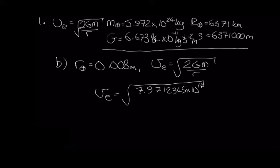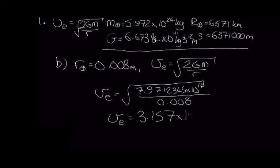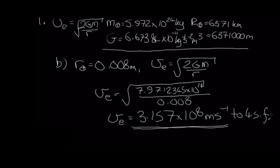That's just G multiplied by the mass. But now our radius is much smaller — just 0.008 meters. Putting those numbers into the calculator, we get v_esc = 3.157×10⁸ m/s. We've substituted the numbers into the equation and given our answer to four significant figures.